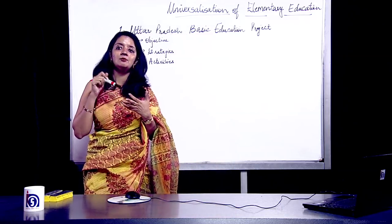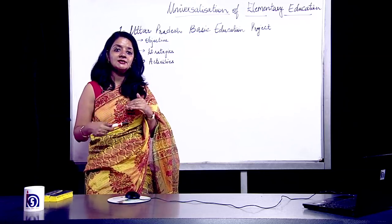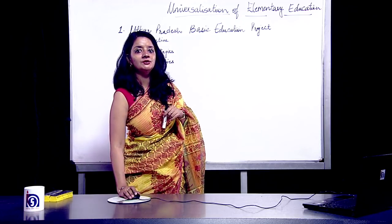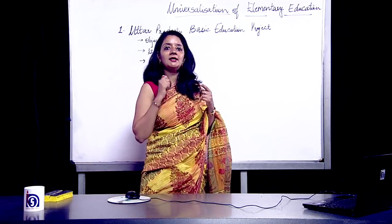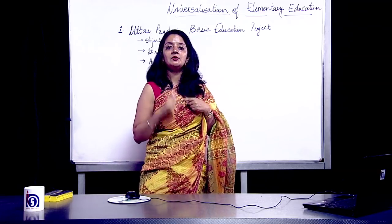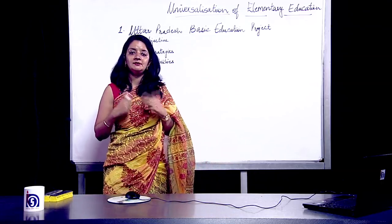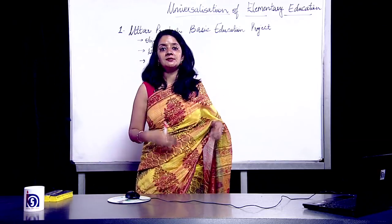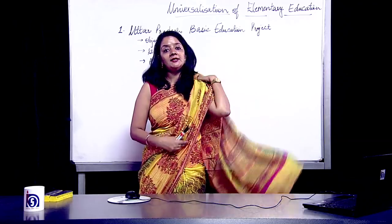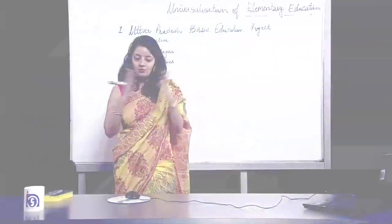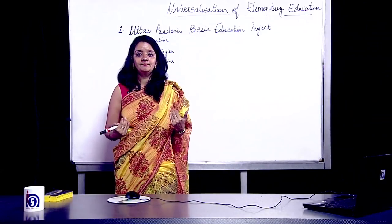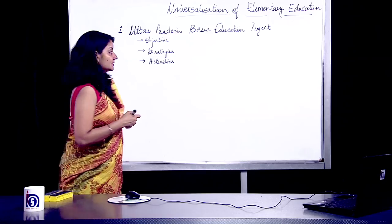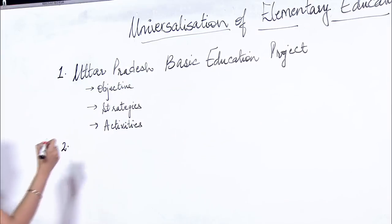The activities under the UP Basic Education Project included: first, educational activities related to culture and communication; second, activities related to science and environment; and third, creating a sense of social justice — promoting equality and ensuring everyone is treated fairly. These were the key activities designed under this project.